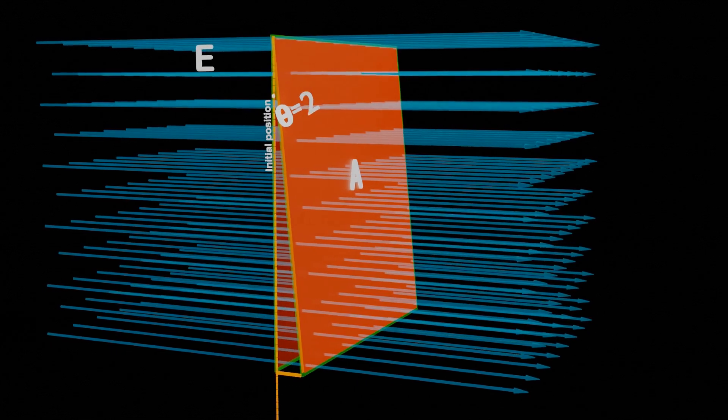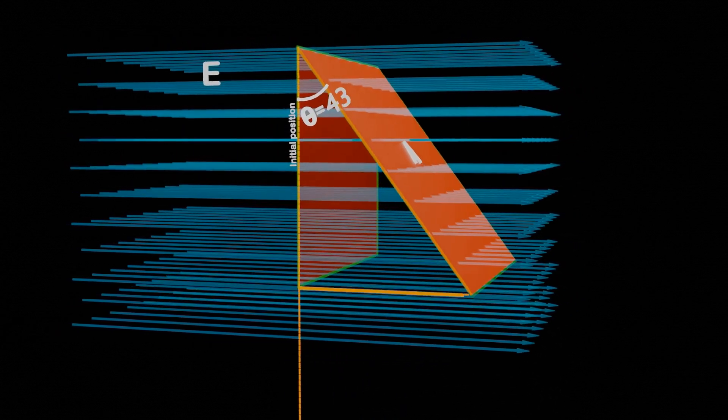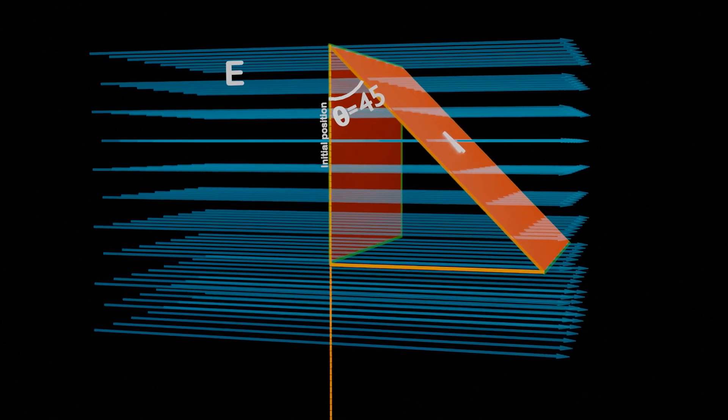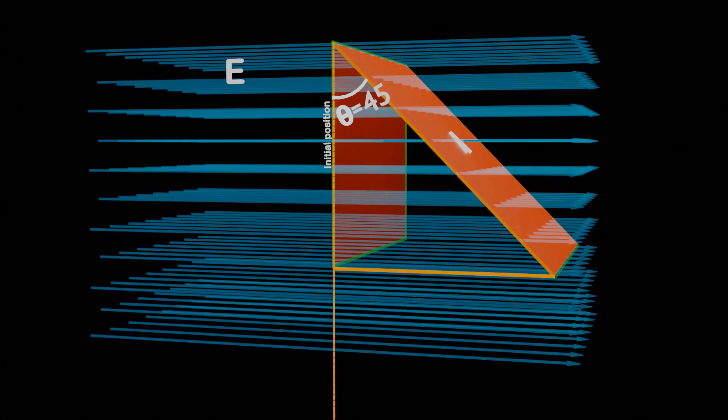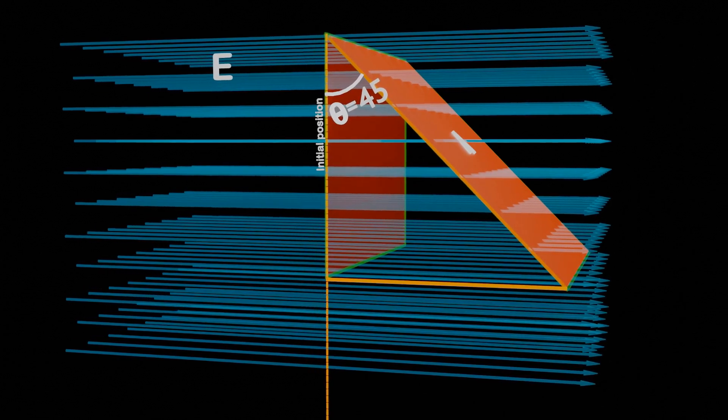In other words, as we rotate the plane from zero degrees to some theta angle, the effective area decreases. Therefore, if area decreases, the electric flux, which represents the quantity of electric field lines passing through a fixed area, also decreases.